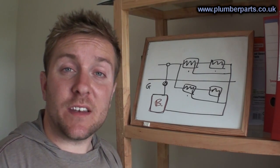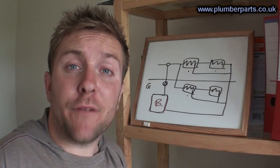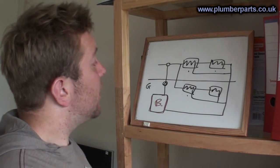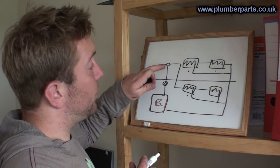Most plumbers, when installing an indirect hot water cylinder, will put a flow regulating valve on the return side of the coil. Let's have a look at it. So, you have your boiler, your pump, and your three port valve, or if you've got an S plan, it will just be a two port valve for each side.